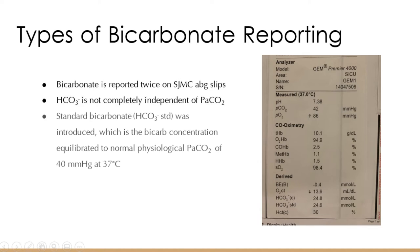We actually report bicarb two different ways here at St. Joe's. The 'C' on bicarb stands for calculated, not corrected. Our ABG machines measure your pH and CO2, then calculate your bicarb. The problem is CO2 travels from tissues to lungs three ways: through bicarb, dissolved as PCO2, and bound to hemoglobin. So the more elevated your CO2, the more off your calculated bicarb will be.